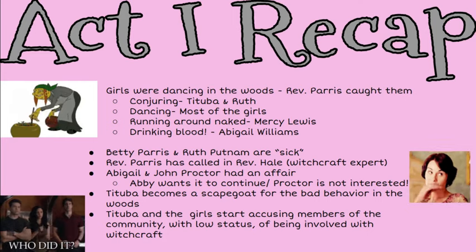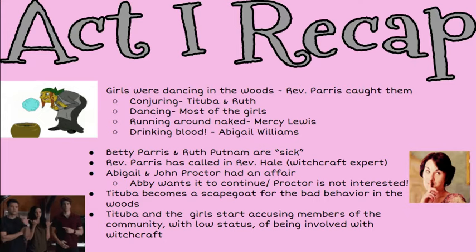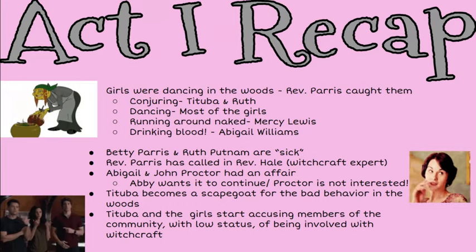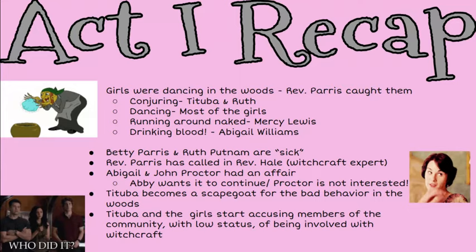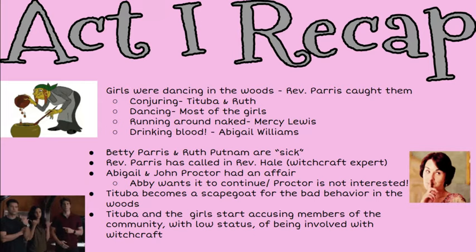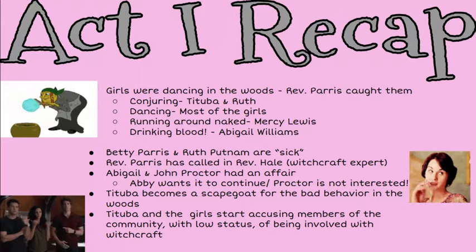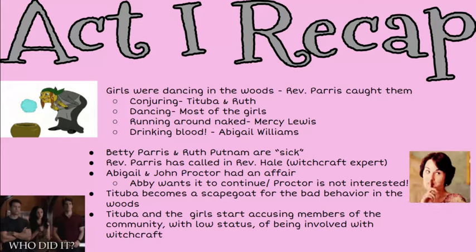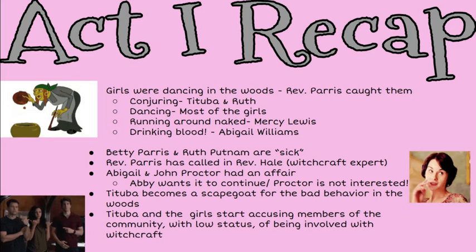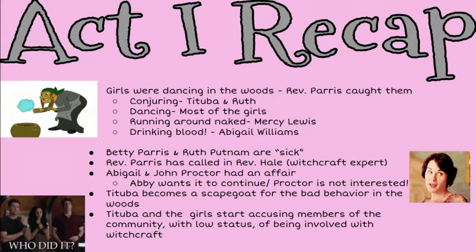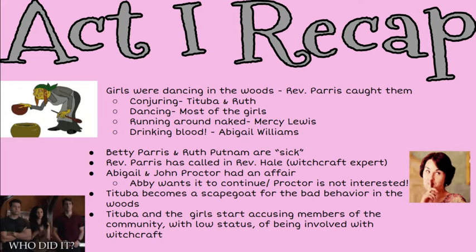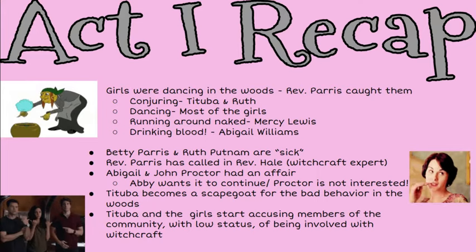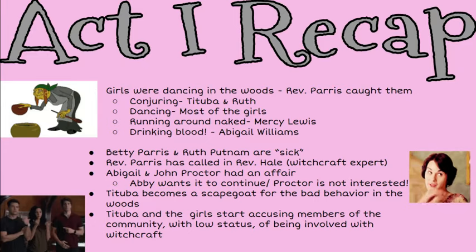Tituba becomes the scapegoat for everybody's bad behavior in the woods because she has very low status in town — she is a slave and doesn't really have anybody to stick up for her. Tituba is then questioned and pressured, and they basically tell her: if you don't confess to being a witch, we're going to kill you. So Tituba's options are confess to witchcraft and live, or deny it and be killed. She confesses to witchcraft and being aligned with the devil — even though she is not — and says she made a mistake and wants to come back to God.